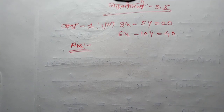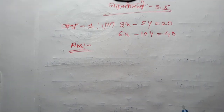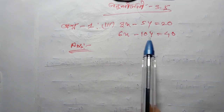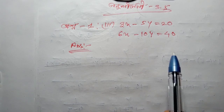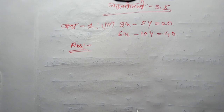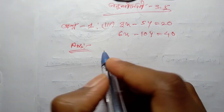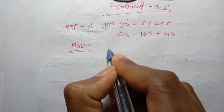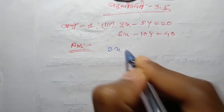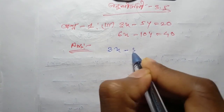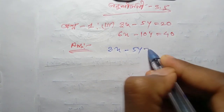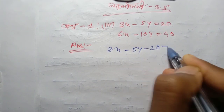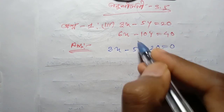Class 10, Exercise 3.5, Question 1 Roman 3. The equations are: 3x minus 5y equal to 20, and 6x minus 10y equal to 40. We can take a look at the first equation: 3x minus 5y minus 20 equal to 0.